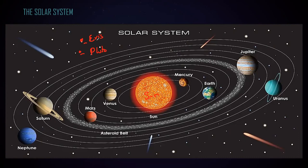So the eight main planets are Mercury, Venus, Earth, Mars, Jupiter, Saturn, Uranus, and Neptune.